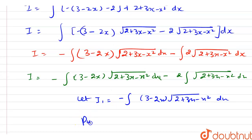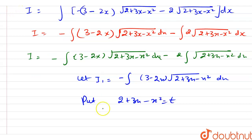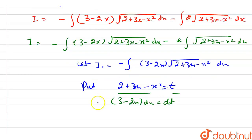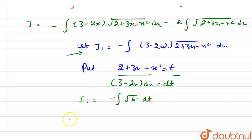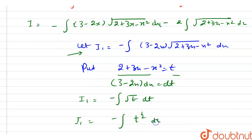Let us put 2 plus 3x minus x square equal to t. On differentiating both sides with respect to x, we have (3 minus 2x) dx equals dt. On substituting this value in I1, we have I1 equals minus integration of under root of t dt, which is minus integration of t raised to power 1/2 dt.